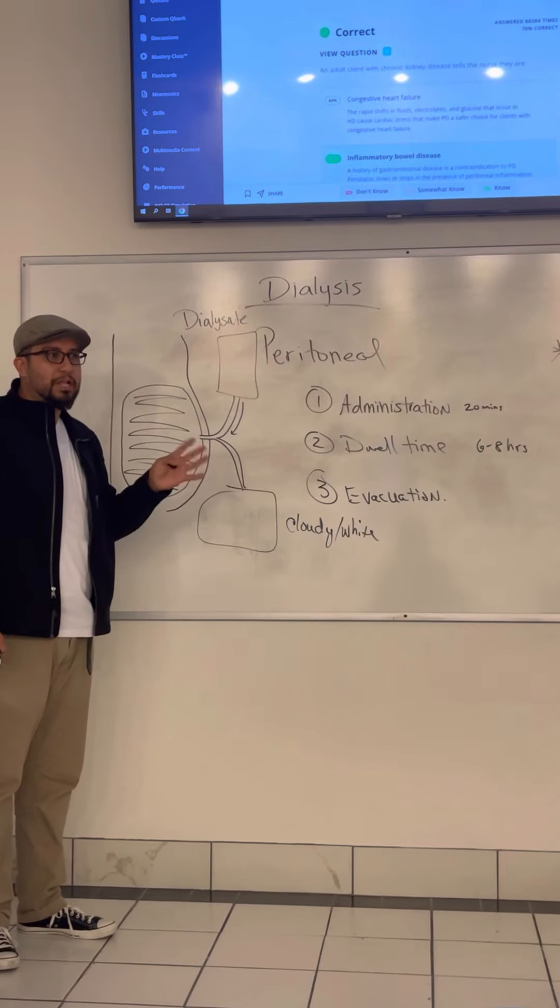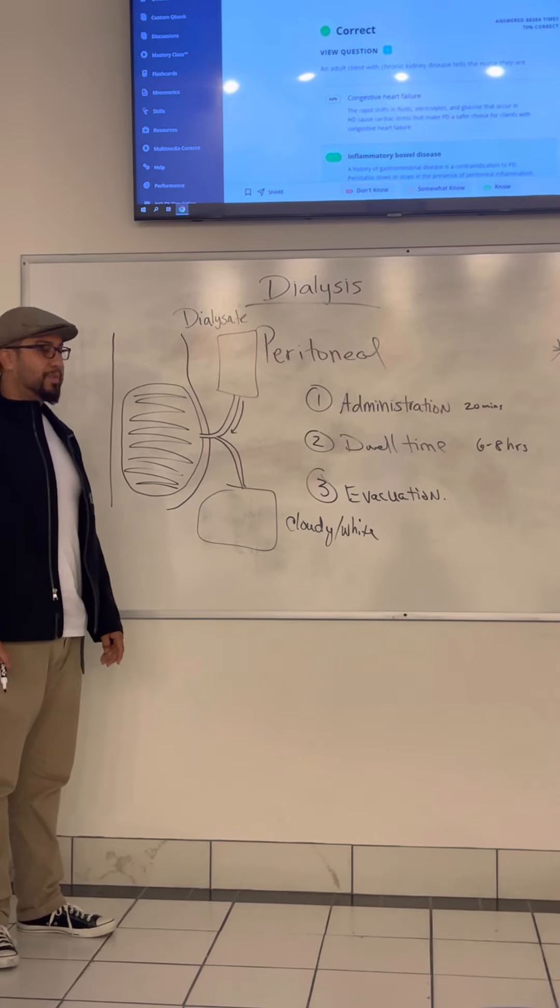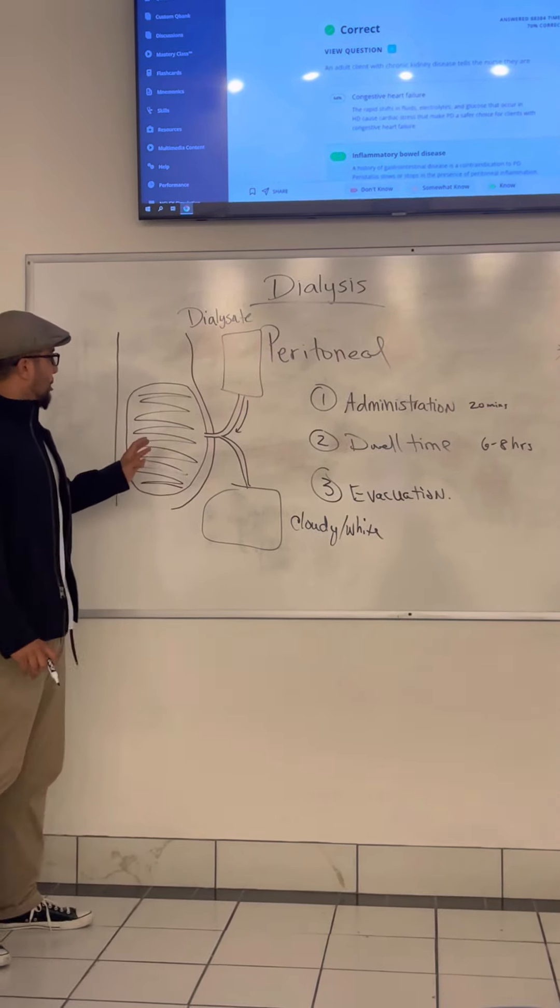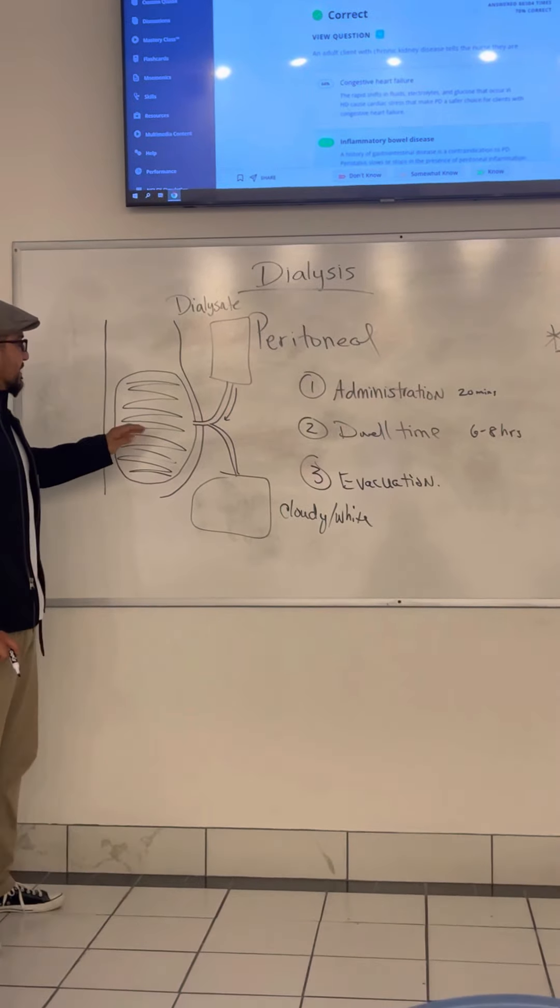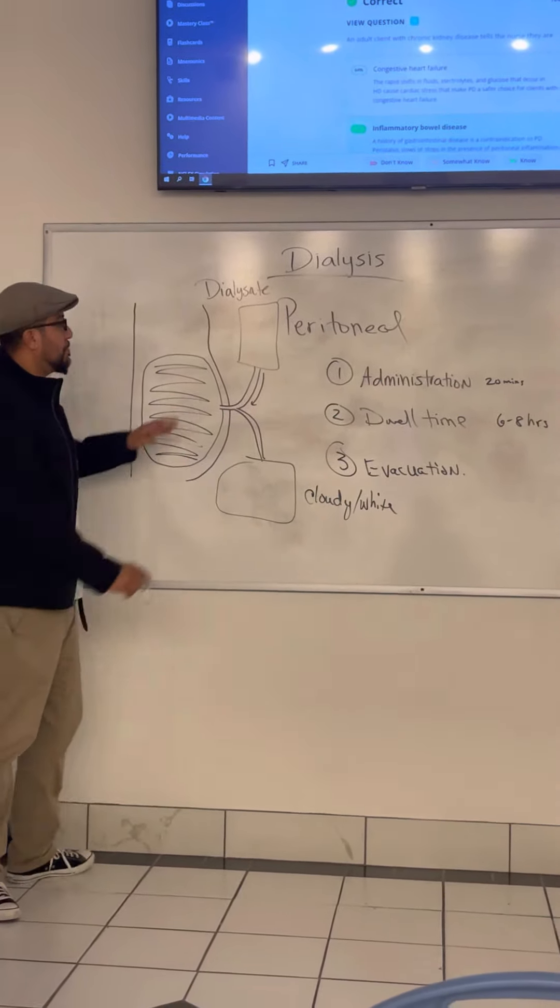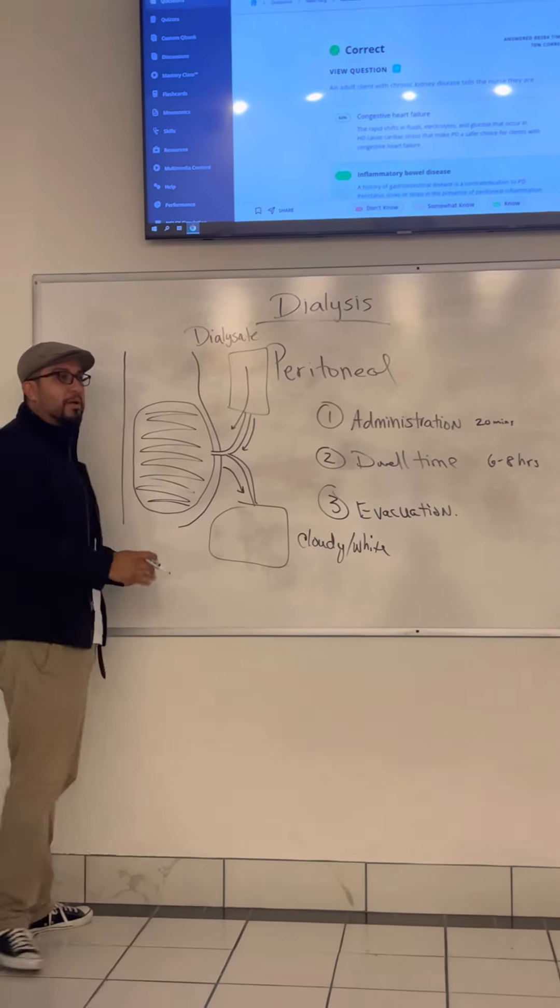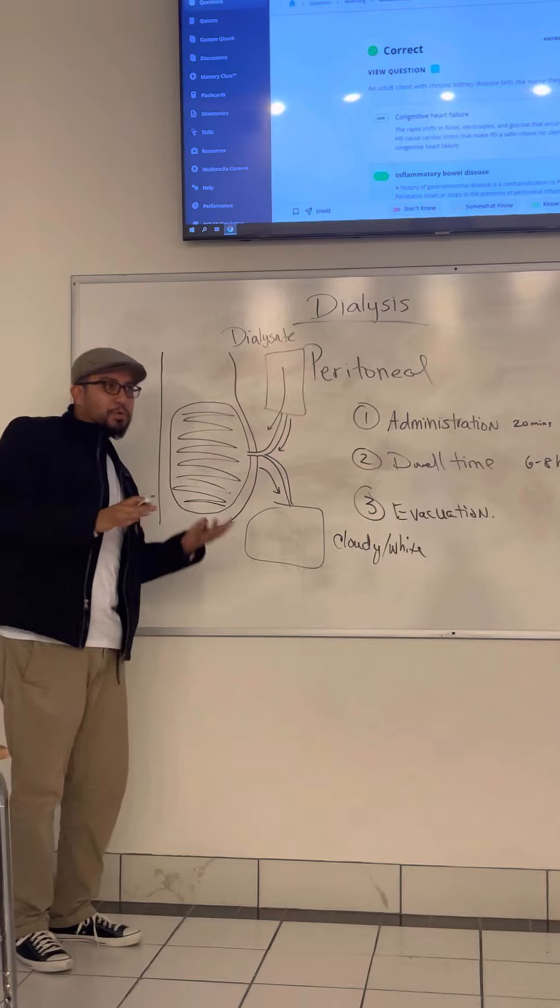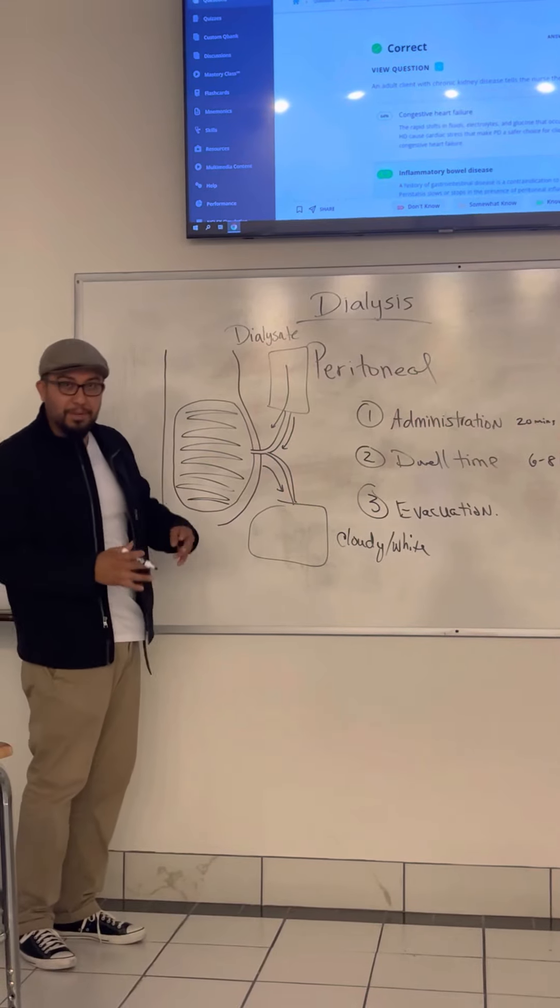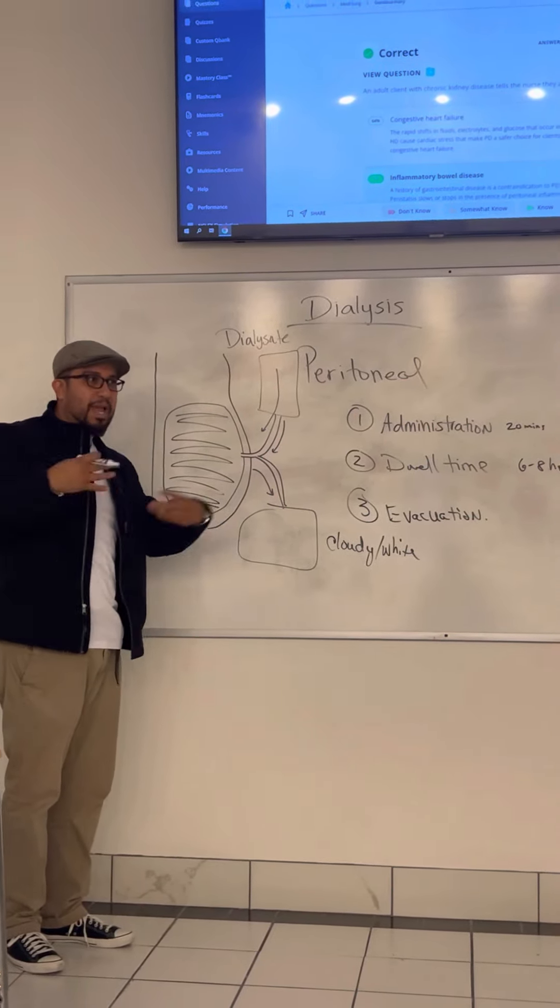What should it look like? It should be either clear or like a pale yellow color. That's expected. Keep in mind that sometimes when you're evacuating the fluid, the volume of fluid that you instilled will not match the volume that's coming out. That's a problem. You must reposition the patient at some point to get that fluid, to get the effluent out. Does that make sense guys?